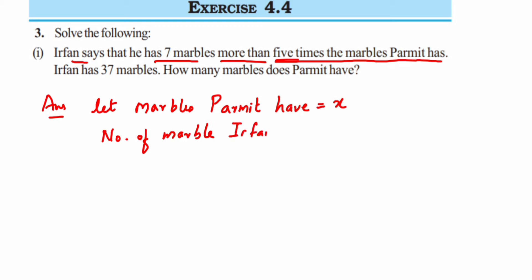Number of marbles Irfan has will be equal to five times the marbles Parmit has, so five times x. Five times means multiplication, so 5x. And seven more than that, so plus seven. Now we know that Irfan got 37 marbles.